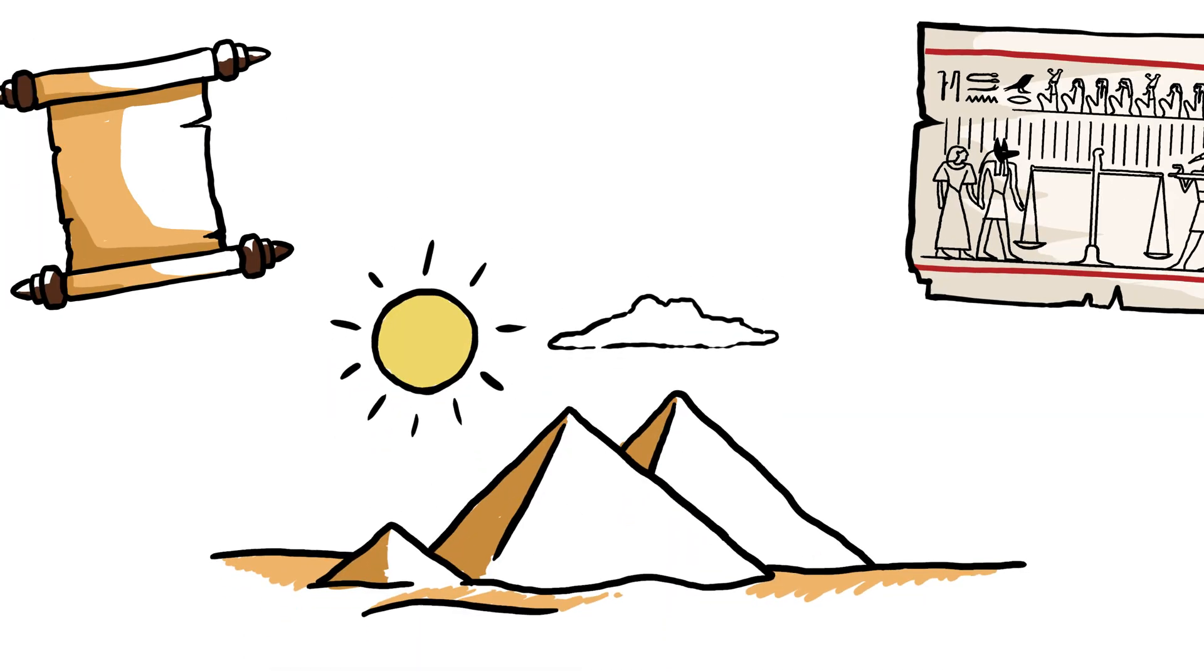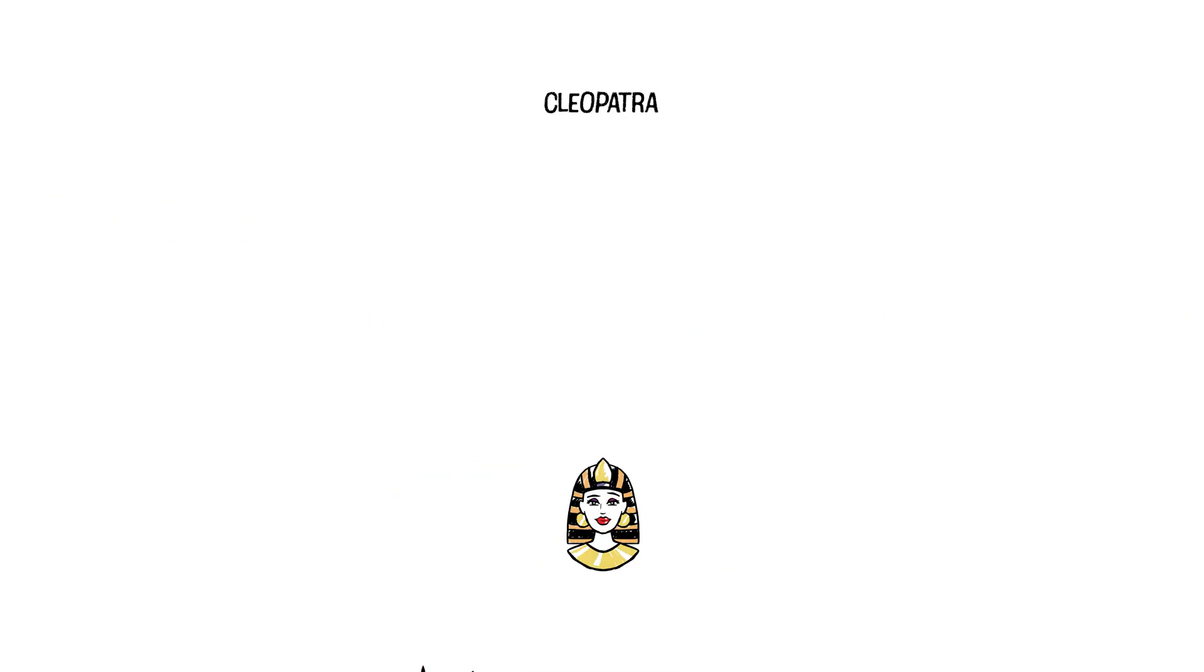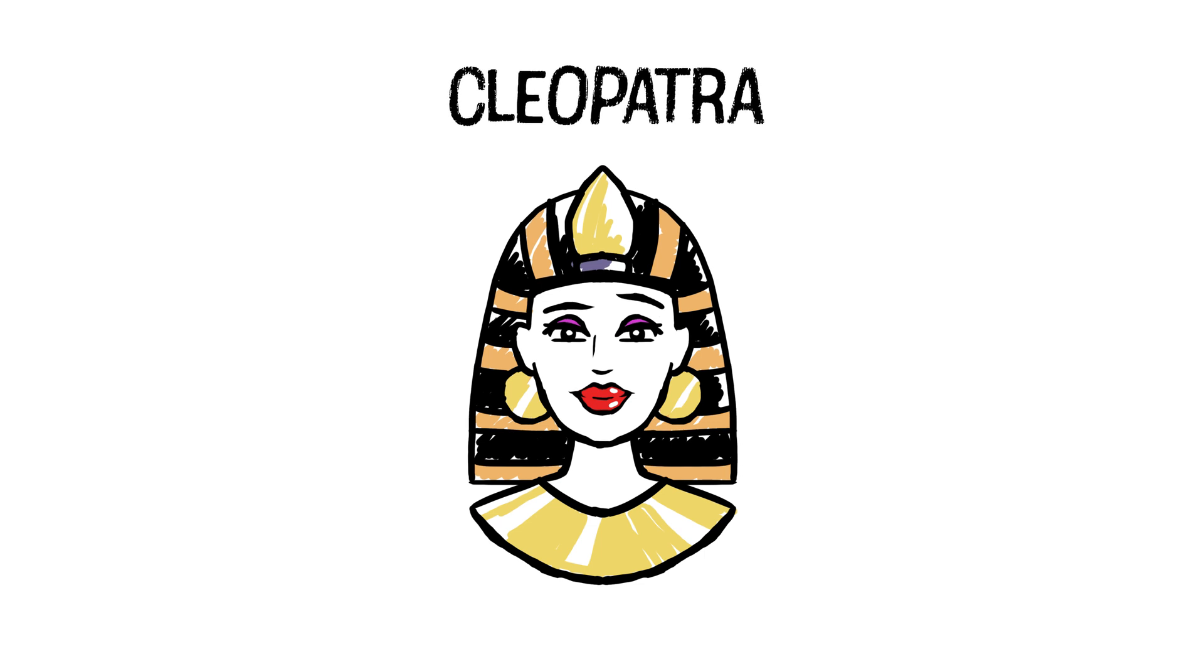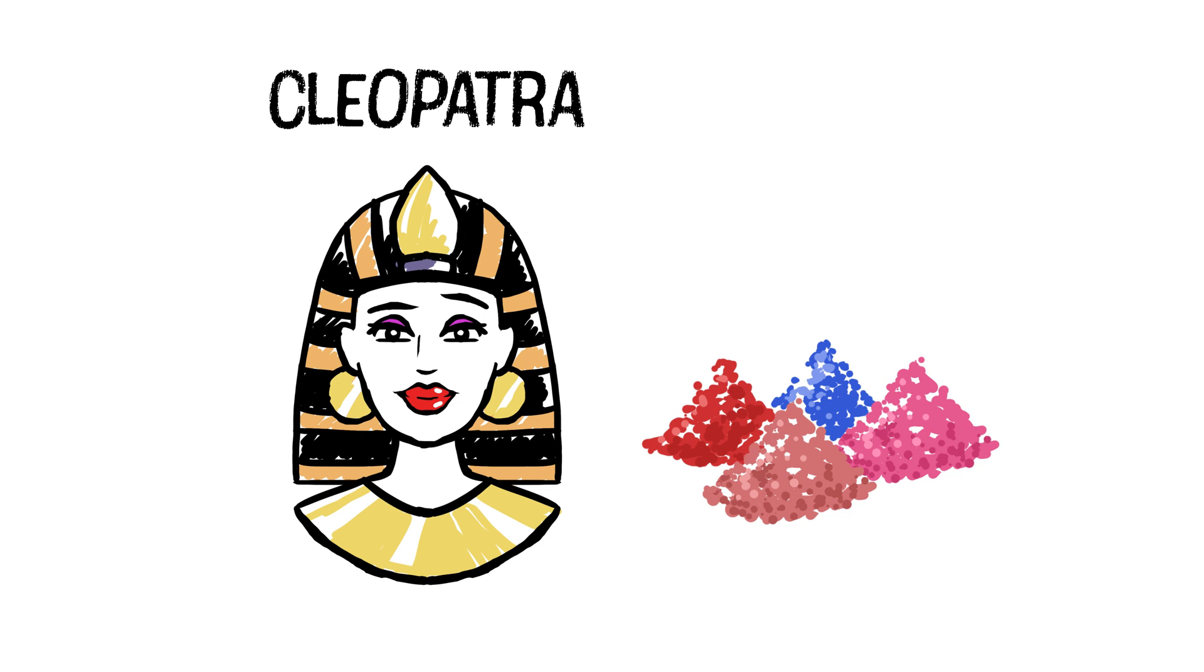Speaking of color, let's throw it way back, like ancient history back. People have been coloring their lips for thousands of years. Cleopatra, for example, was known to rock red lips in ancient Egypt. She used a mix of pigments, including one called carmine.